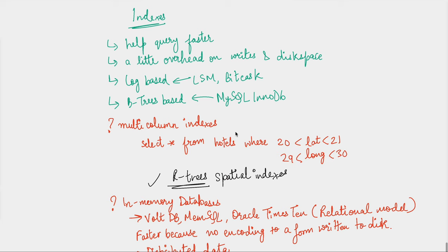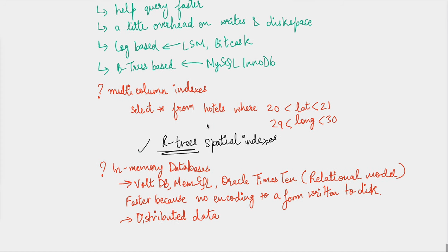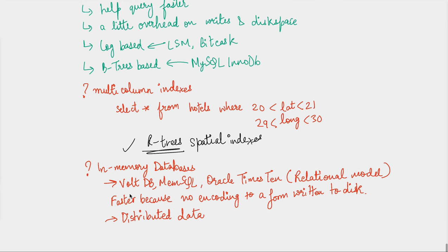I also want to talk about multi-column indexes. So far we've only discussed single-key indexes. But what if you want to select all hotels where latitude is in a certain range and longitude is in a certain range? B-trees and LSM trees are not capable of doing that efficiently — they can only give you records in a range for one key, and then you'd have to scan the full result set for the second key. For that we have R-trees, which are spatial indexes and help answer these multi-column range queries faster.